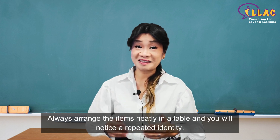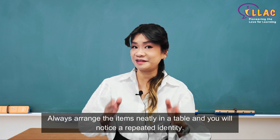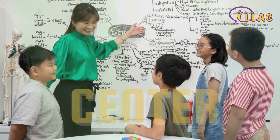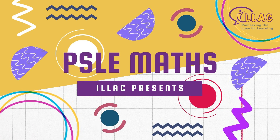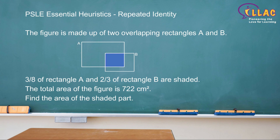The figure is made up of two overlapping rectangles A and B. 3 over 8 of rectangle A and 2/3 of rectangle B are shaded. The total area of the figure is 722 cm². Find the area of the shaded part. Always arrange the items neatly in the table and you will notice a repeated identity.